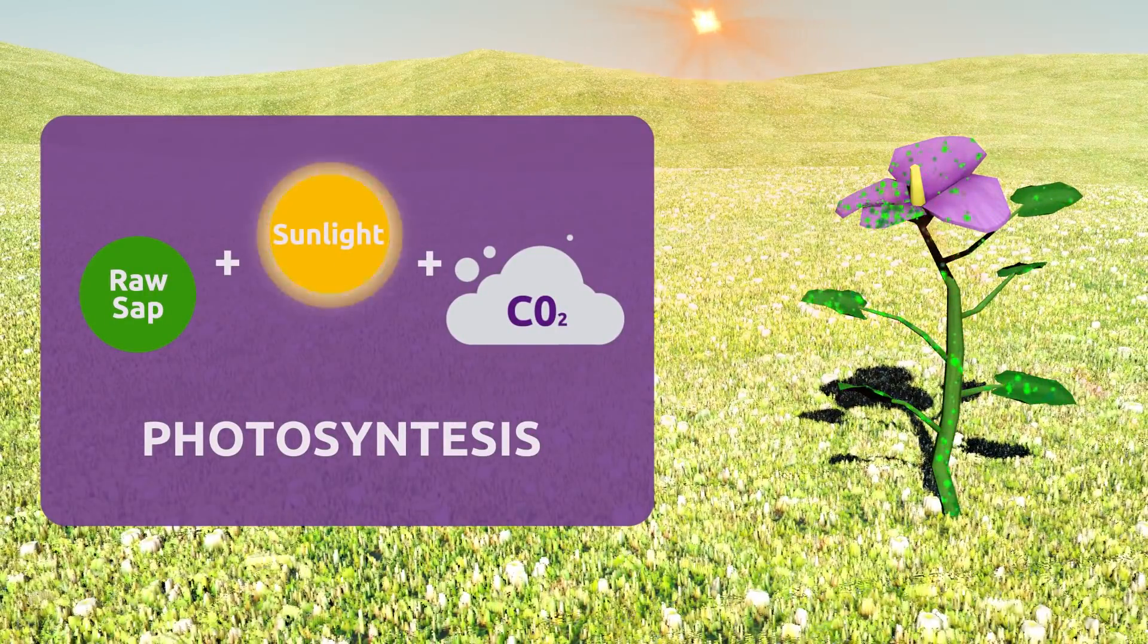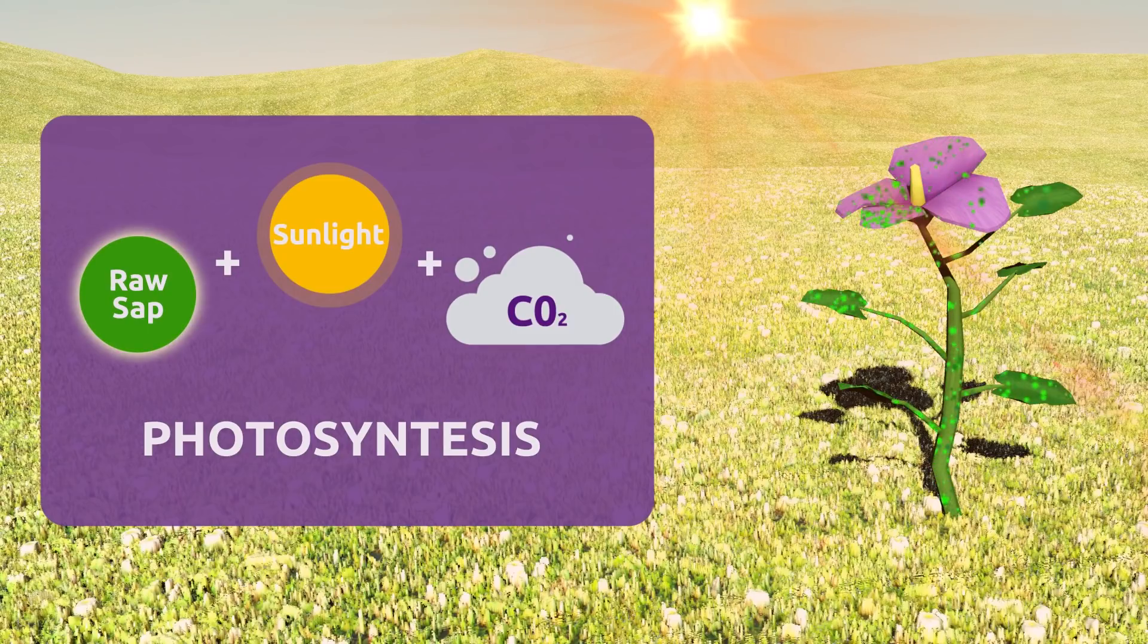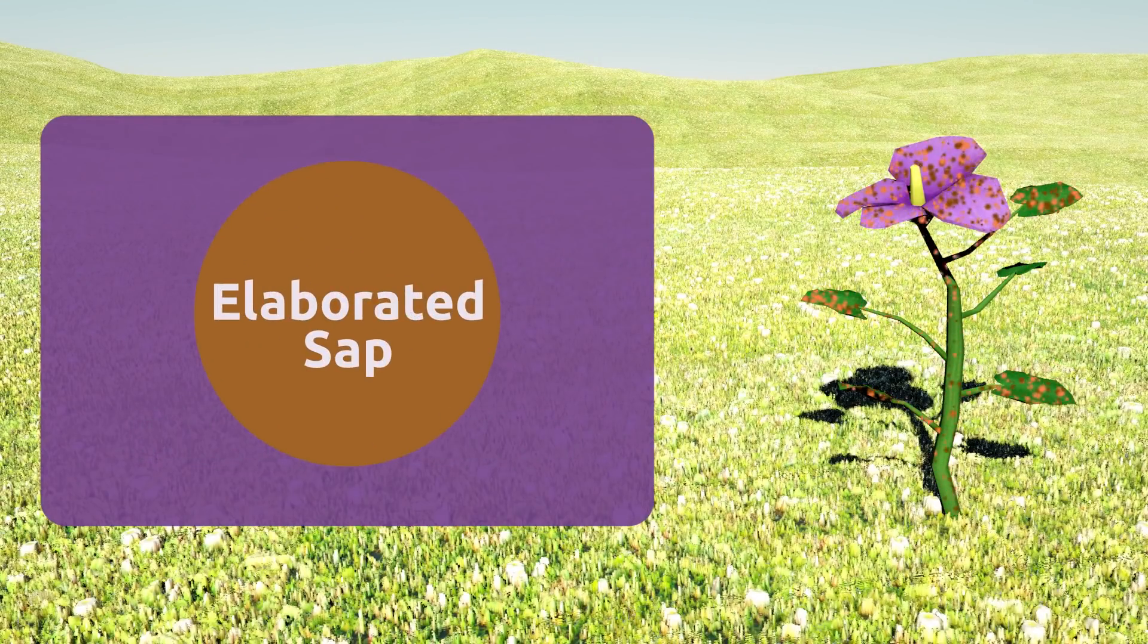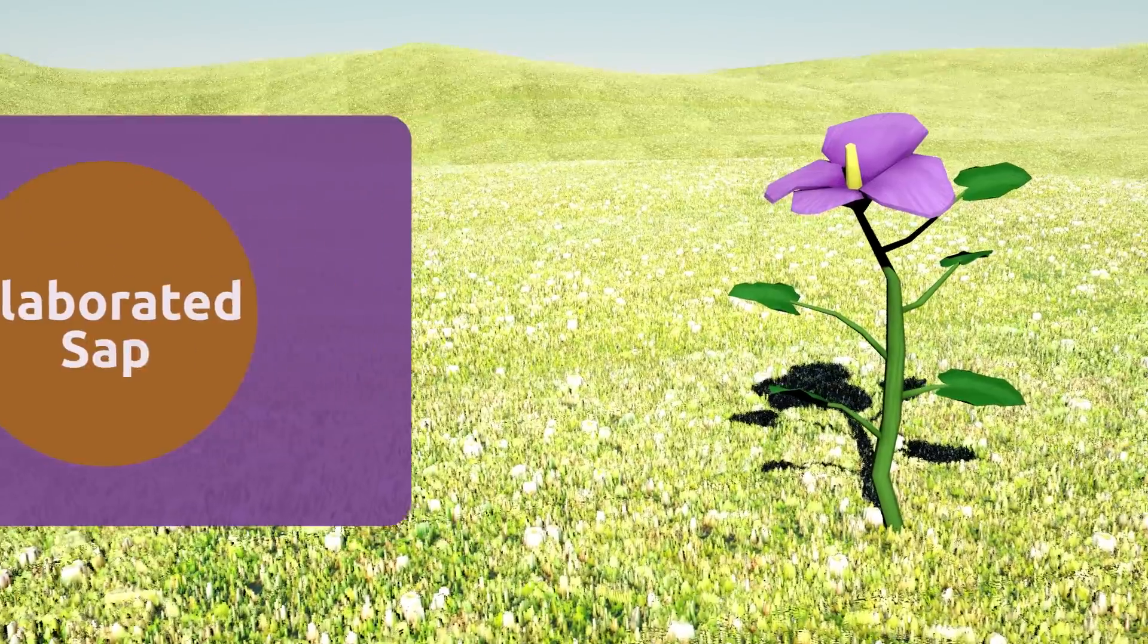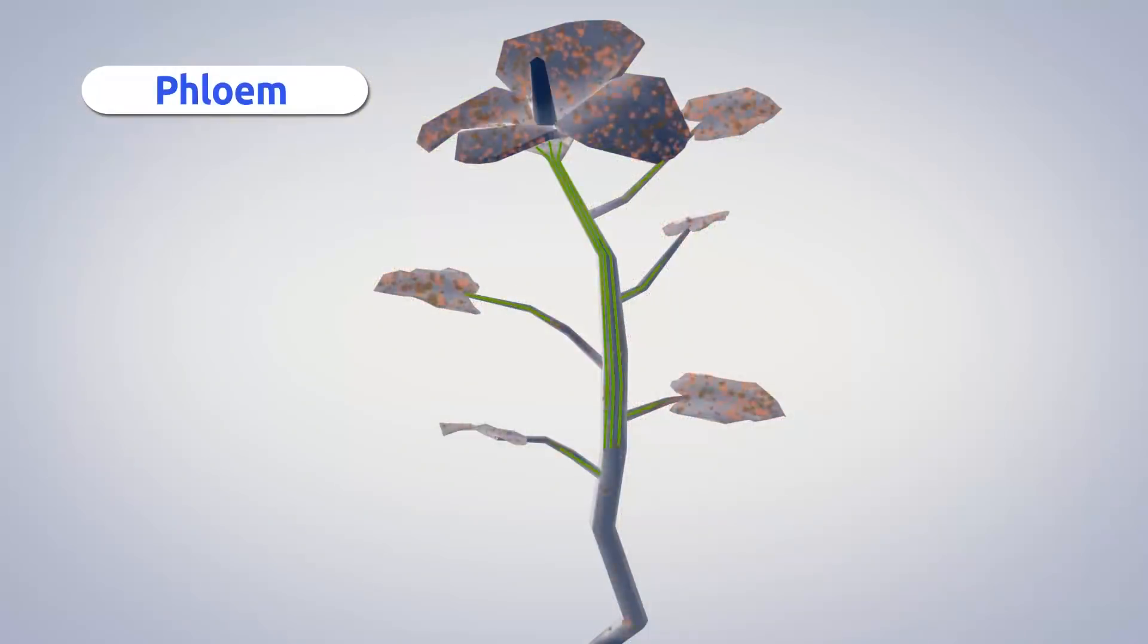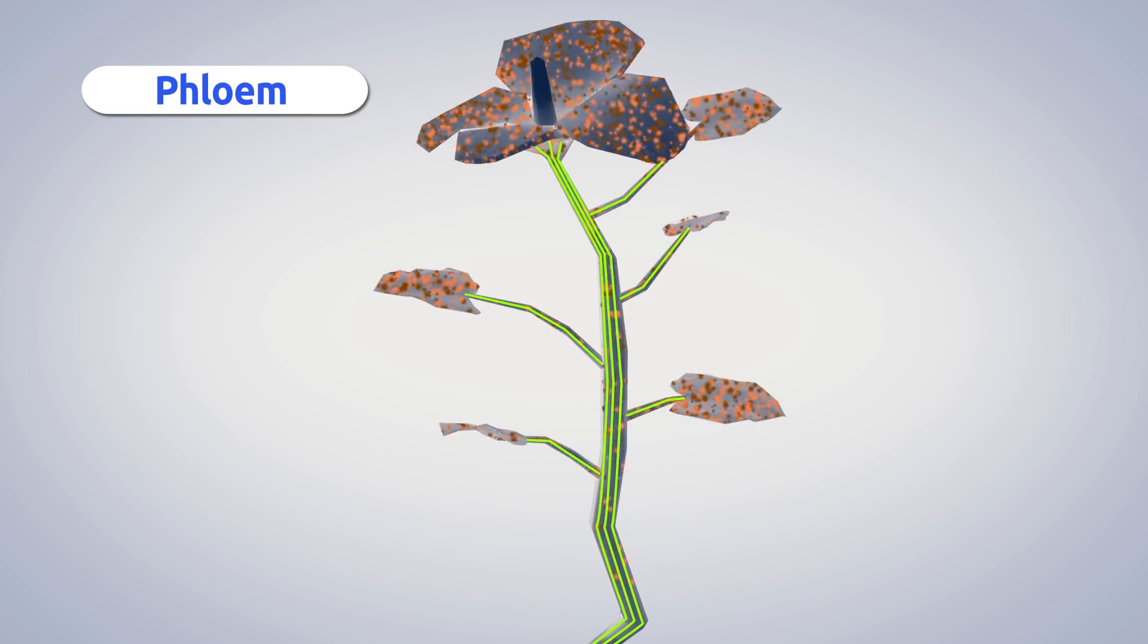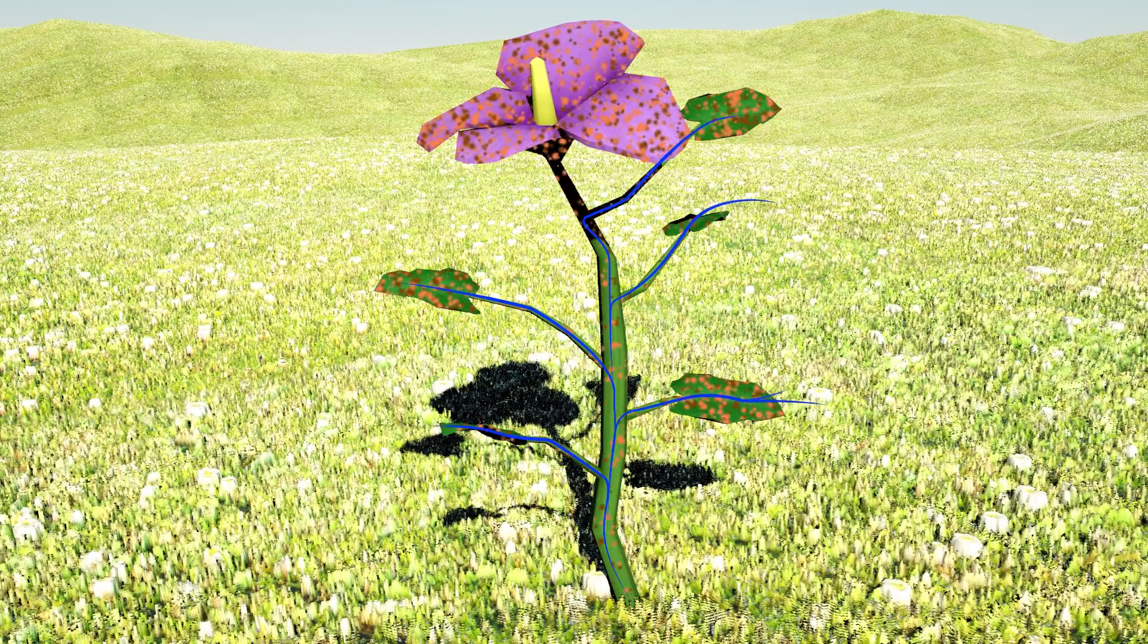Photosynthesis involves sunlight, raw sap, and carbon dioxide. During photosynthesis, raw sap becomes elaborated sap, and living tissues called phloem spread elaborated sap to the rest of the plant. This is when oxygen is released.